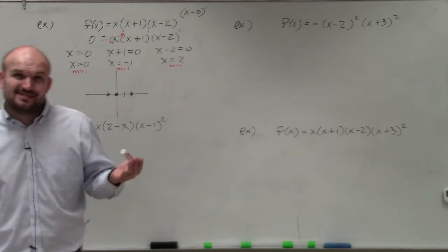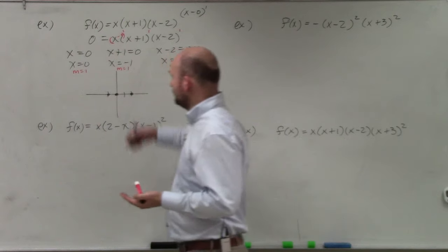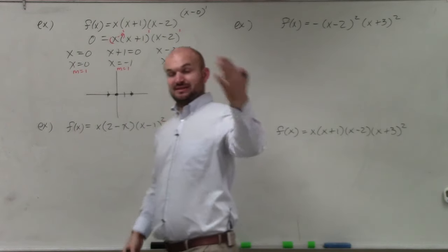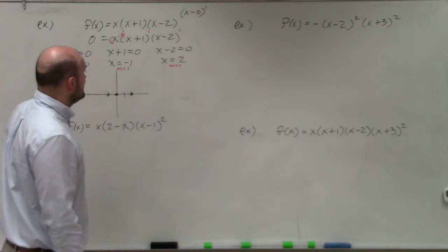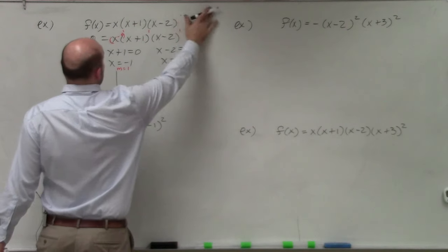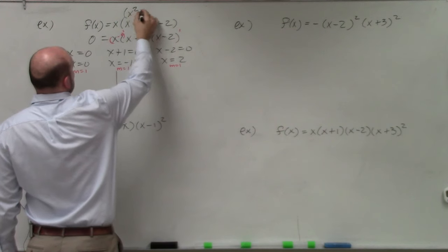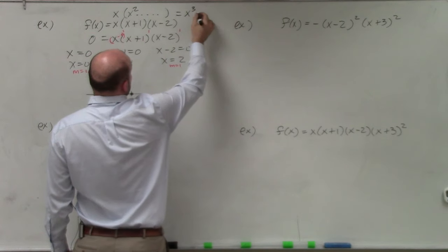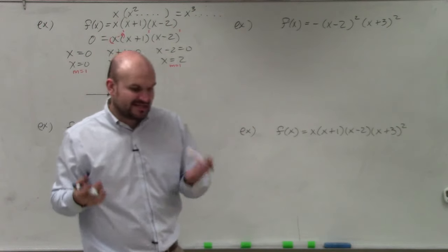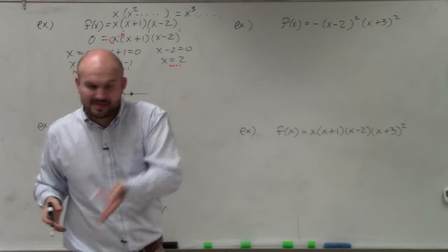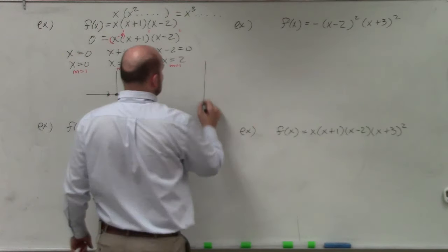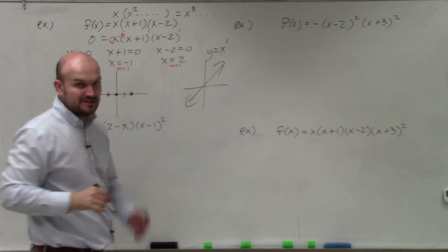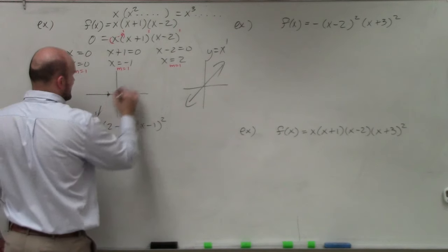To identify what the graph looks like, we still need to know the end behavior. To identify end behavior, we need the leading coefficient and the degree. Multiplying (x+1)(x−2) gives x squared, and then multiplying by x gives x cubed. When the degree is odd and the leading coefficient is positive — similar to y = x — the end behavior falls left and rises right.